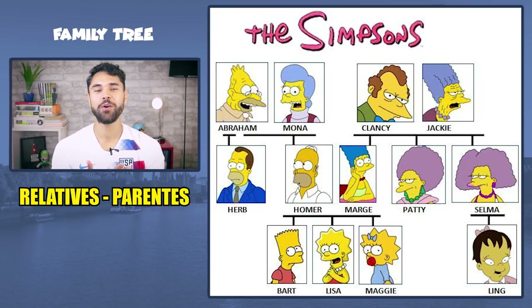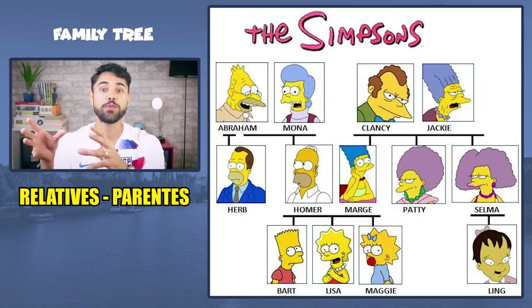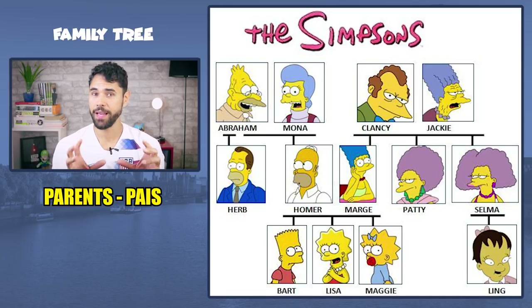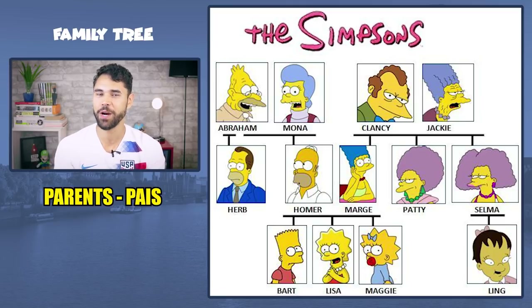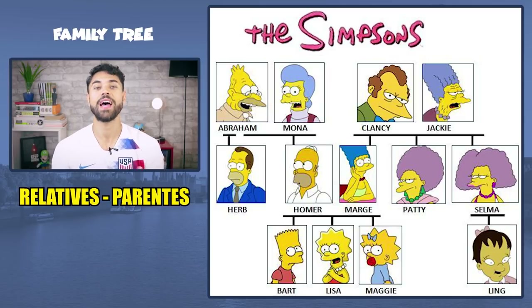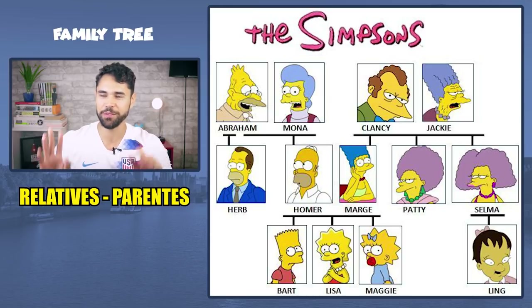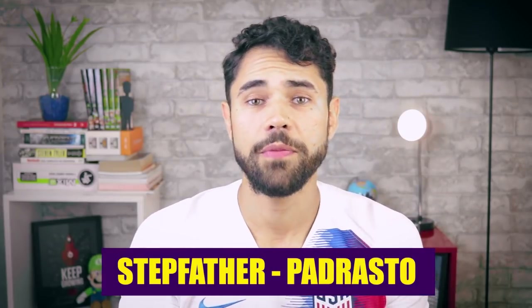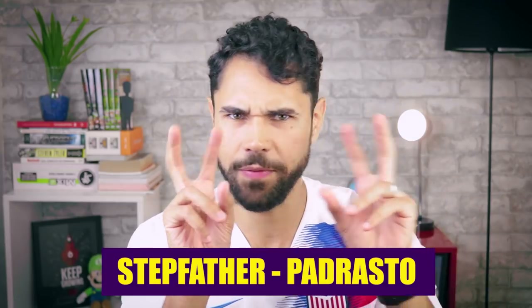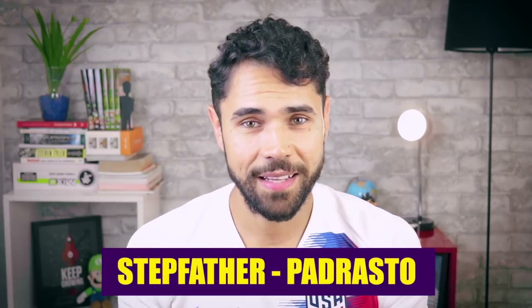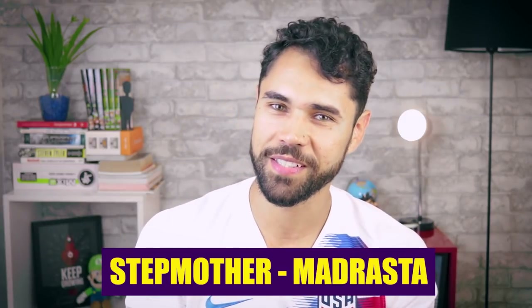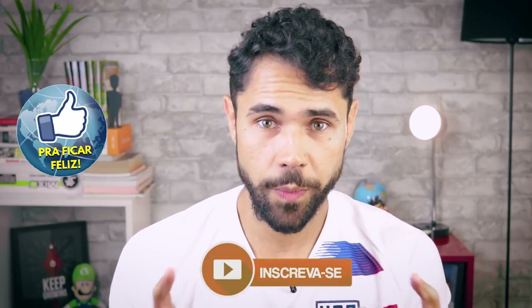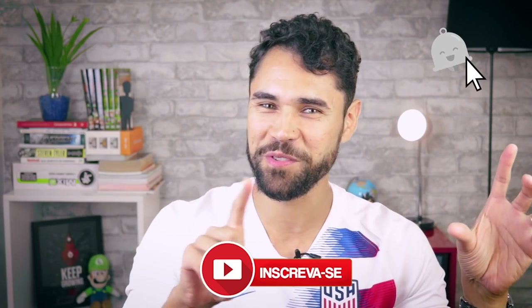Agora, pais — pai e a mãe. Quando você chamar os meus pais, você vai chamá-los de parents. Parece que é um falso cognato, né? Parece que parents dá ideia de parentes no geral, mas não. Parents é o pai e a mãe. E relatives aí sim são os parentes — todo mundo ali no geral, os agregados e tudo mais. Posso falar aqui de mais outros membros da família: padrasto é o stepfather, e a madrasta vai ser a stepmother.